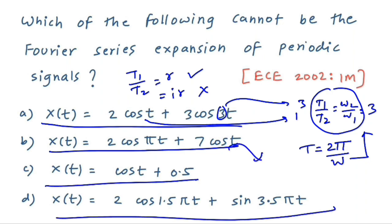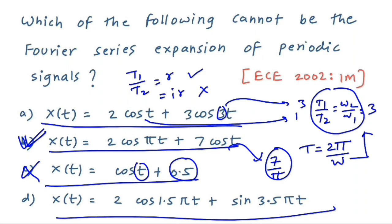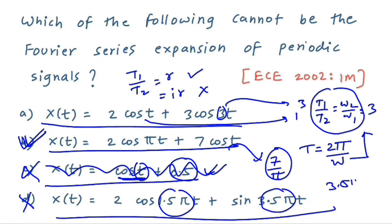For option B, the ratio is 7/π, which is irrational — so this signal is aperiodic and Fourier series cannot be applied; this is the correct answer. For option C, there is a DC component (always periodic) and cos(t) with ω = 1, so x(t) = cos(t) + 0.5 is periodic — not the correct option. For option D, with frequencies 1.5π and 3.5π, the ratio 3.5π/1.5π = 35/15 is rational, so it is periodic — also not the correct answer.